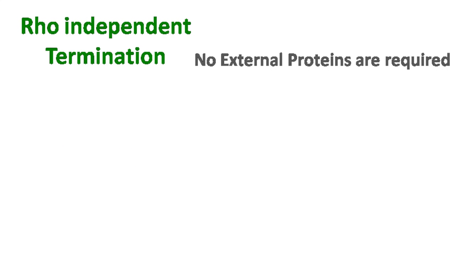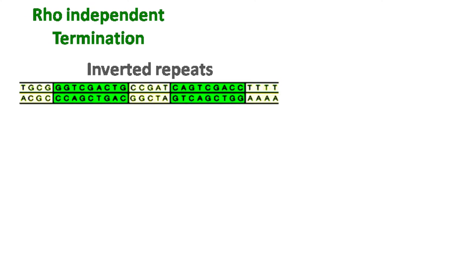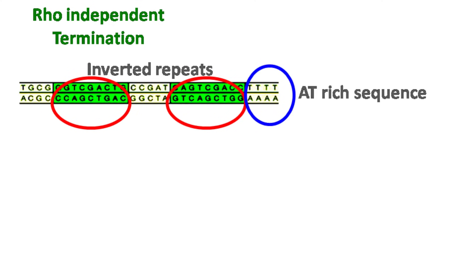The rho-independent termination does not require external proteins or external factors for the termination to occur. The rho-independent terminators are also known as intrinsic terminators, which consist of two sequence elements: number one, short inverted repeats of about 20 nucleotides, followed by number two, a stretch of eight AT base pairs.